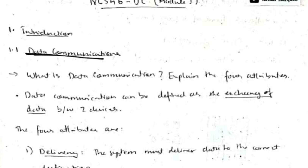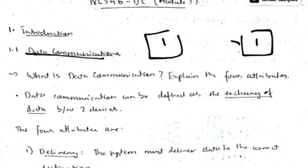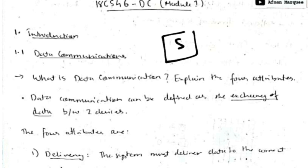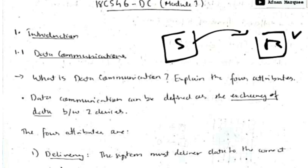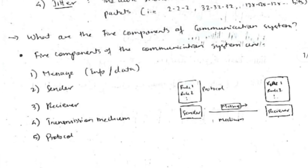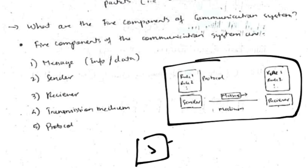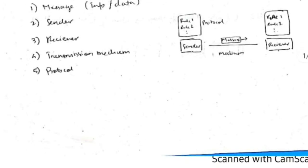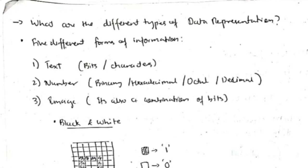The first topic is data communication. Suppose there are two devices and the data getting transferred between them is nothing but data communication — the sending and receiving of data. The receiver expects the data to arrive on time and without errors. The components are: sender, message, receiver, transmission medium (wireless or wired), and protocols, which are the rules to be followed while transmitting.